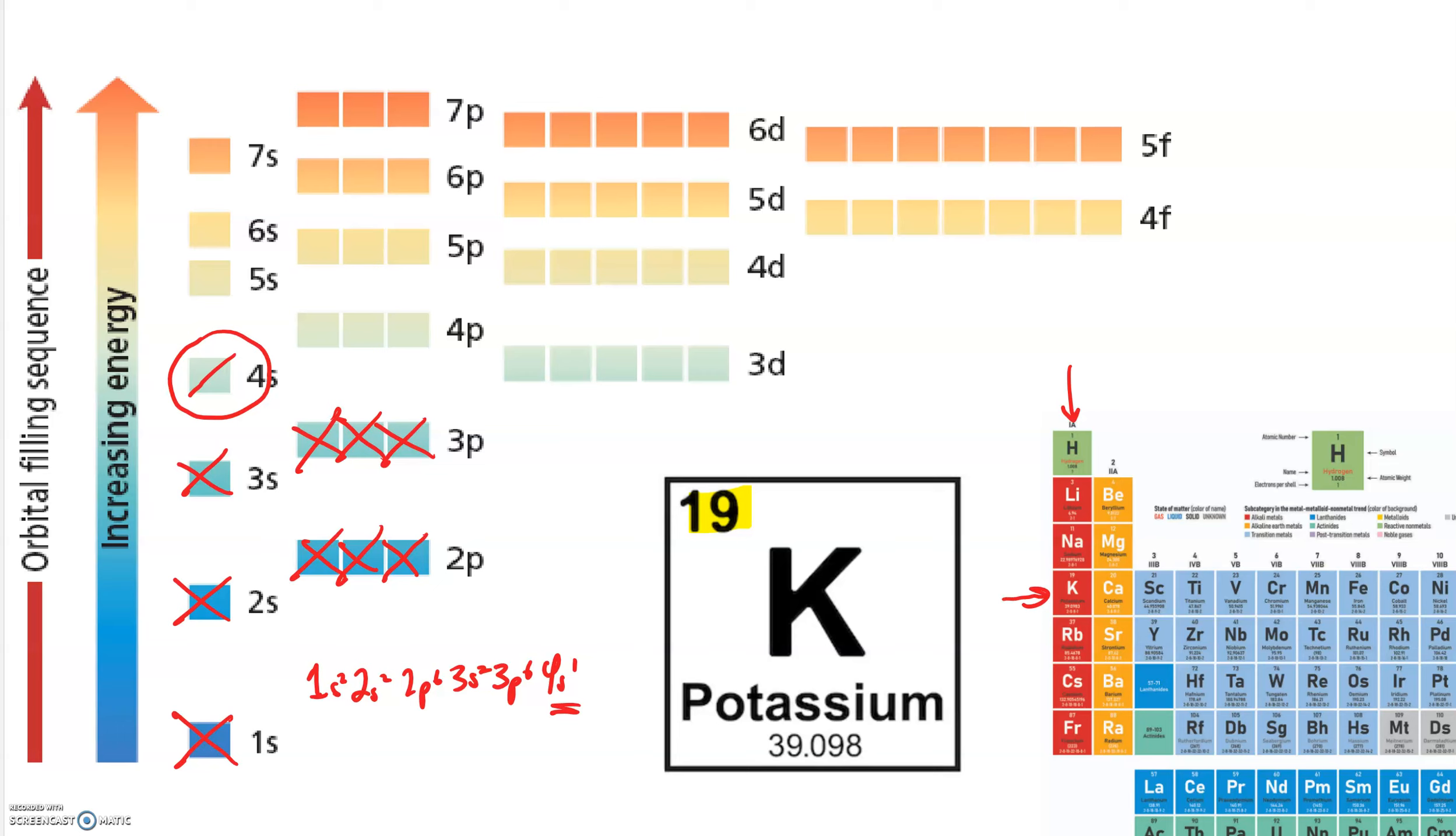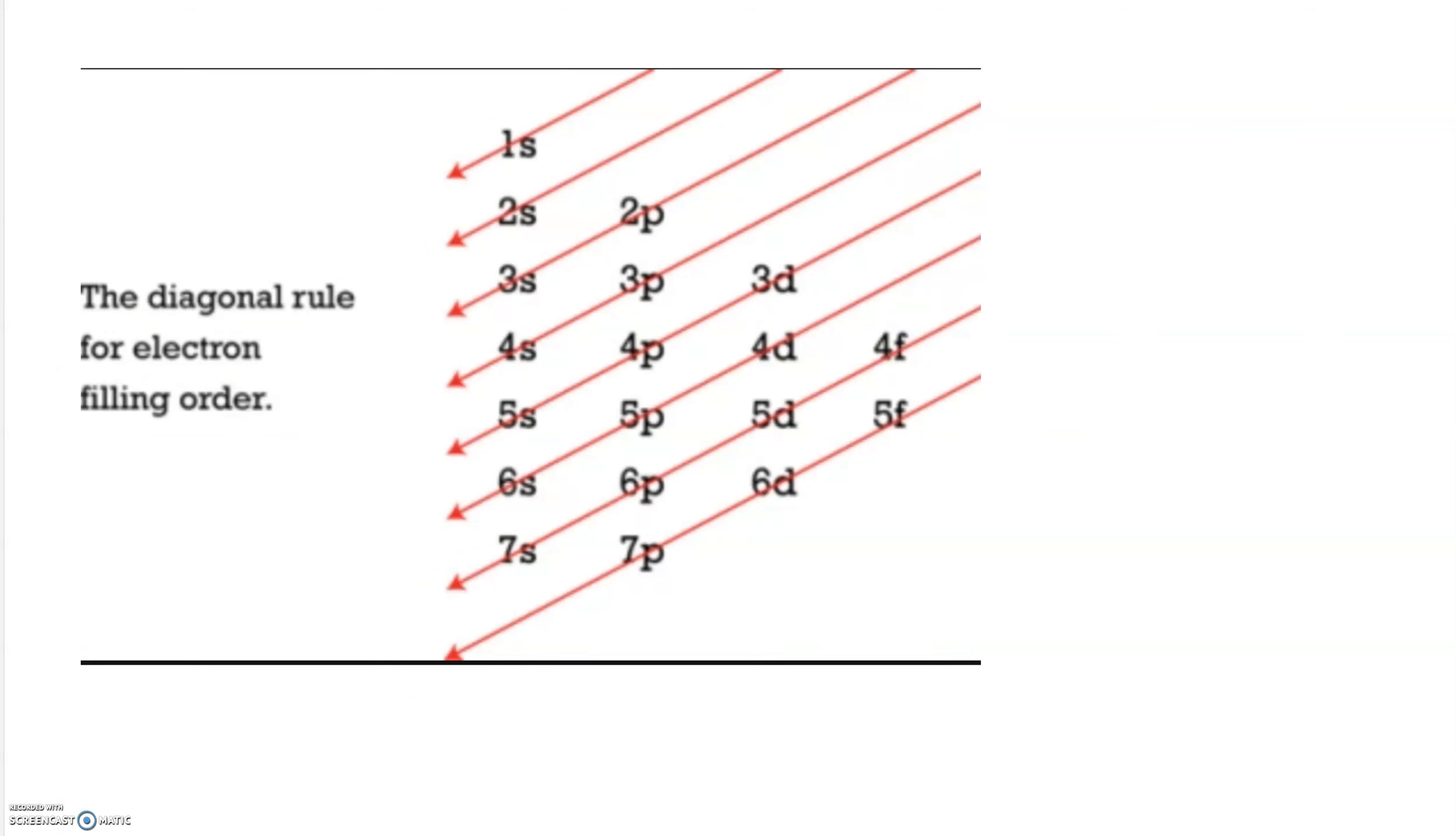So you might guess that there is some confusion because the order in which orbitals fill isn't necessarily numerically consistent. So I'm going to show you an easy device, an easy trick to remember what the filling order is. This is called the diagonal rule for electron filling order. And you might find that it makes more sense if you make these arrows look like this. And if you follow them, it tells you exactly what order the orbitals fill.